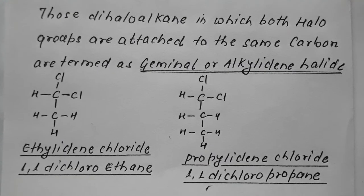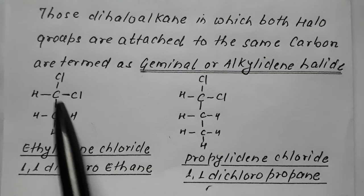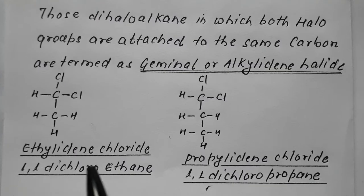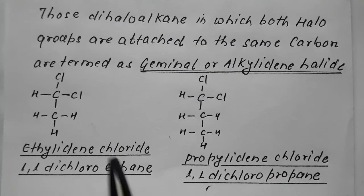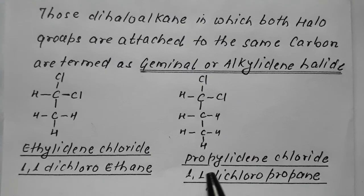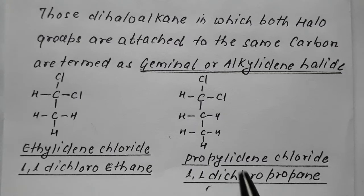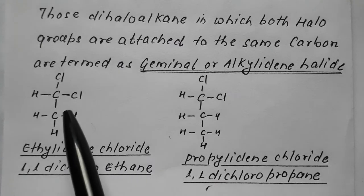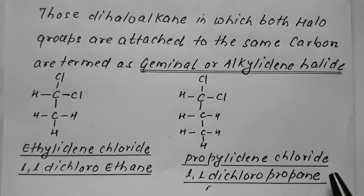Since both halo groups are on the same carbon, this two-carbon compound is termed ethylidene chloride as a geminal halide. When vicinal, it is ethylene chloride; when geminal, it is ethylidene chloride. Both halo groups on the same carbon gives 1,1-dichloroethane. Similarly, propylene chloride in geminal form gives 1,1-dichloropropane.